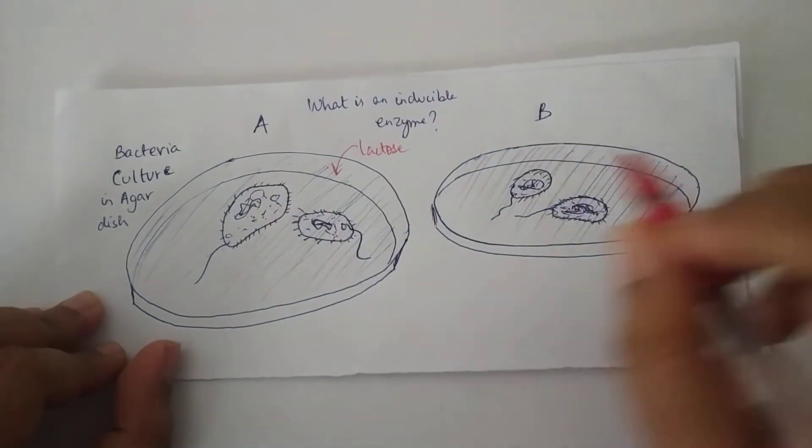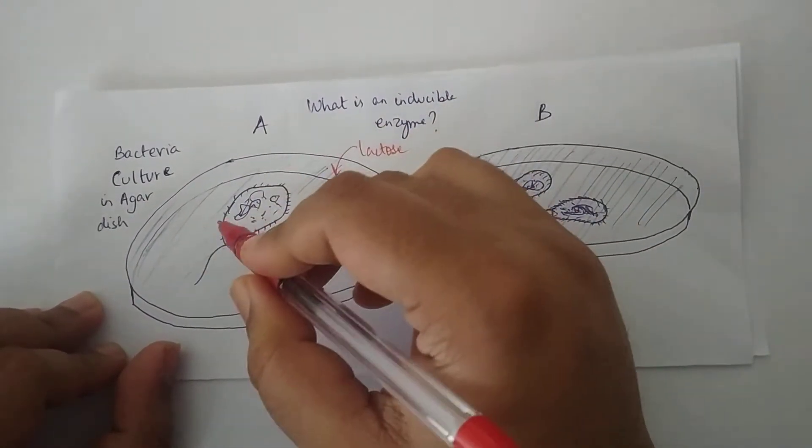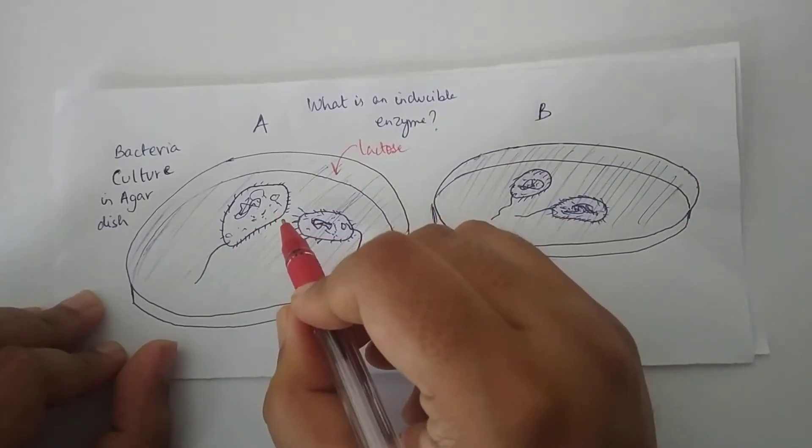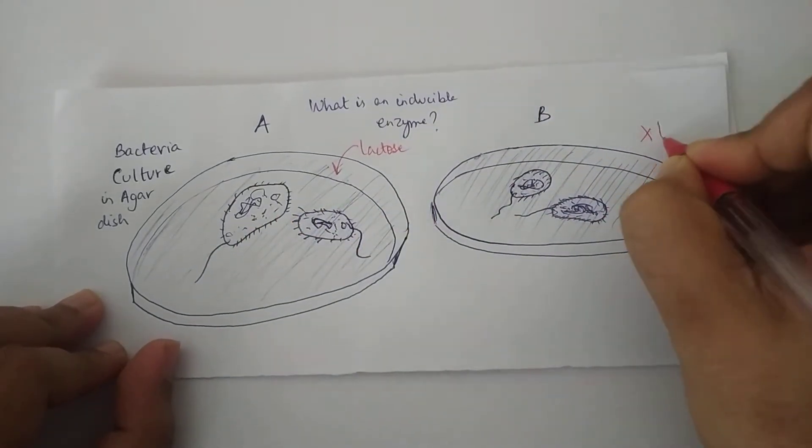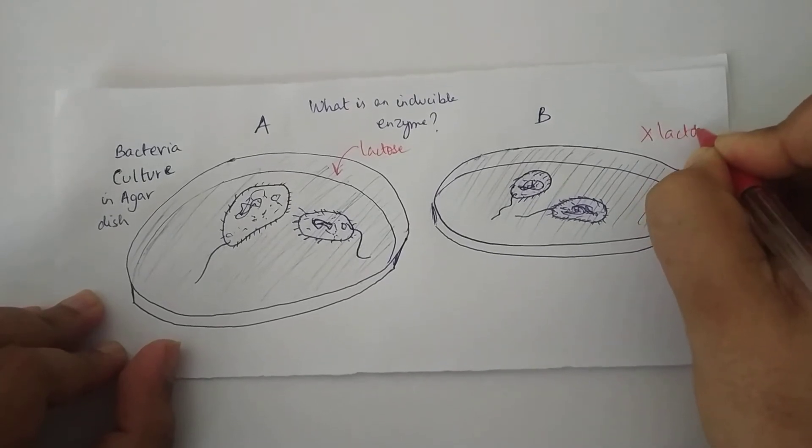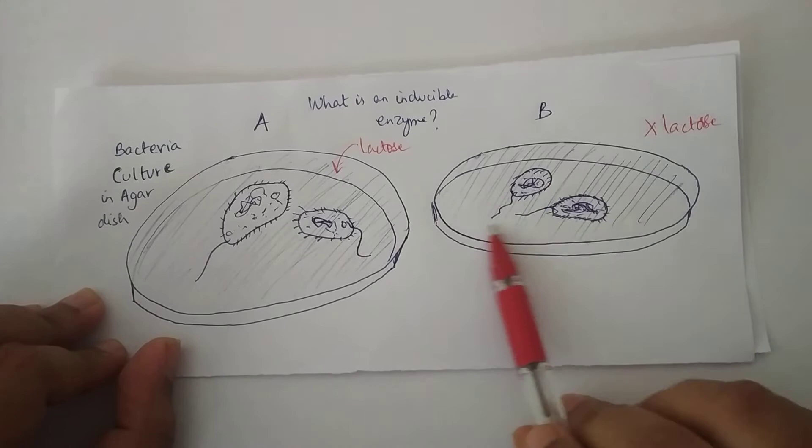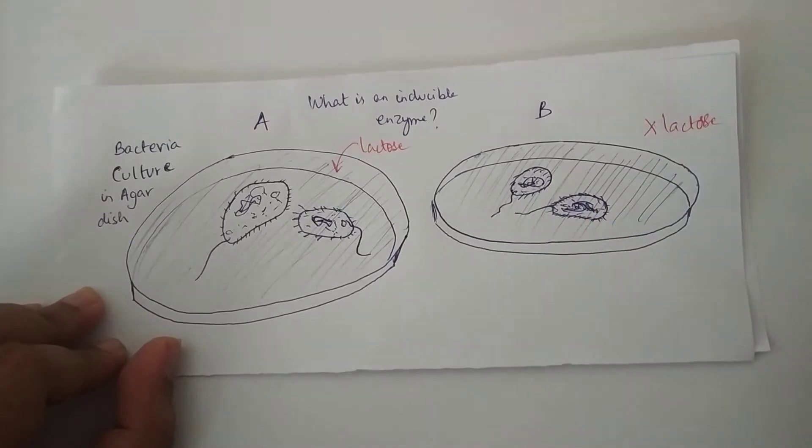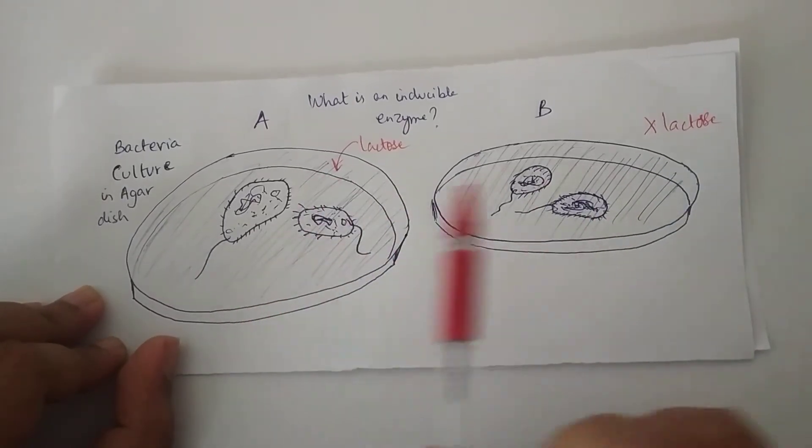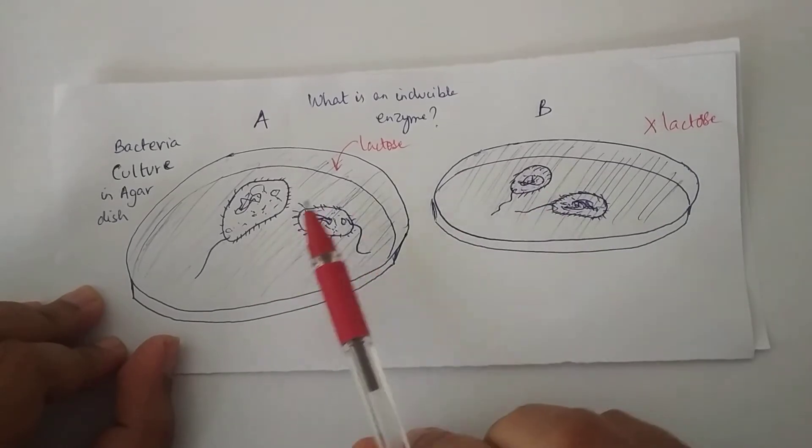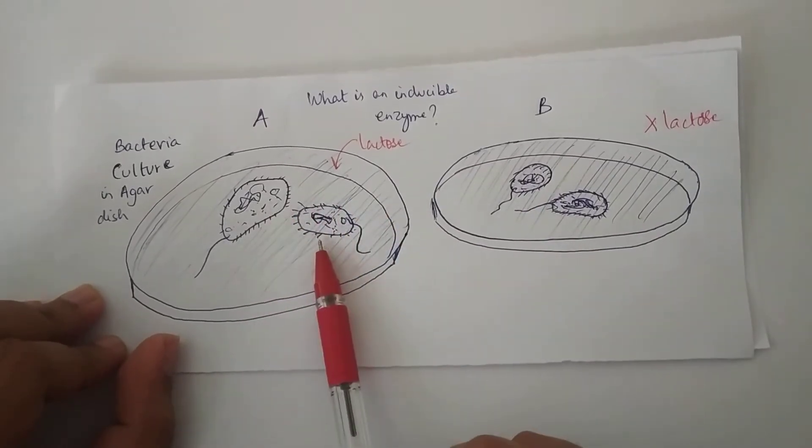So now this medium has lactose in it, whereas this medium does not contain lactose. This is a medium having other nutrients but lactose is absent. And this petri plate has the same bacterial culture as this one and it contains lactose.